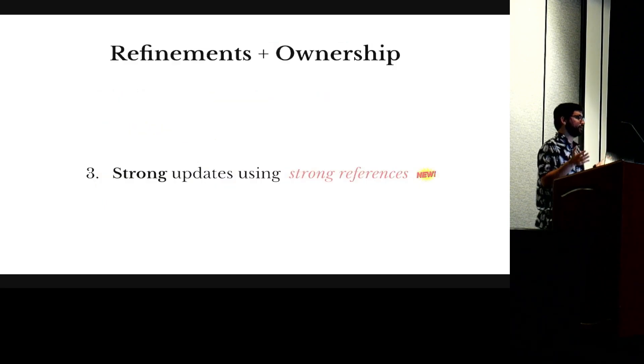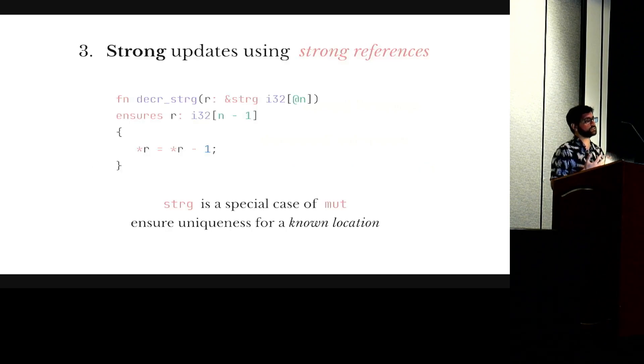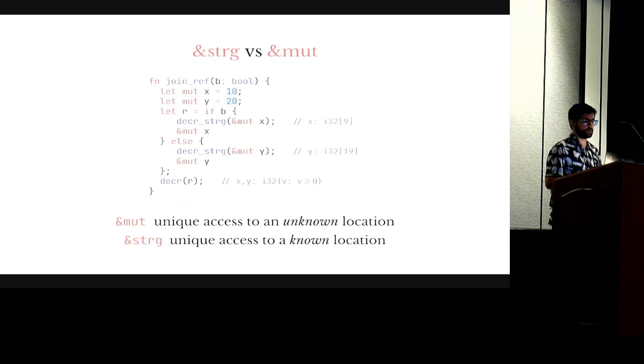And that's why we introduced the concept of strong references. So strong references is a special case of a mutable reference, but they ensure uniqueness of a known location. So when we know the exact location we're pointing to, then we can safely strong update the type of a location. And we do that by extending the signature of a function with these ensures clauses that let us annotate the type of a location after the function returns.